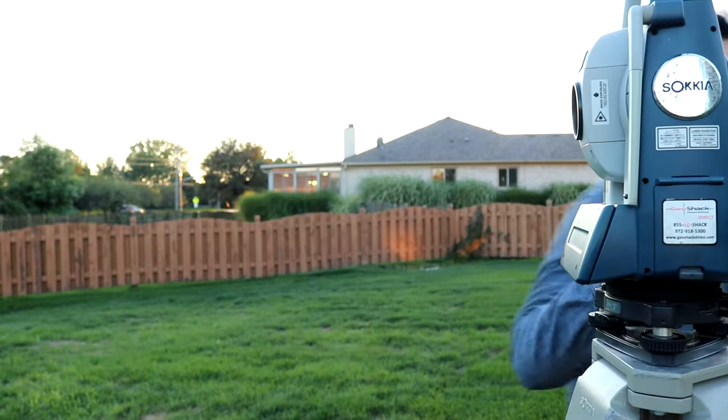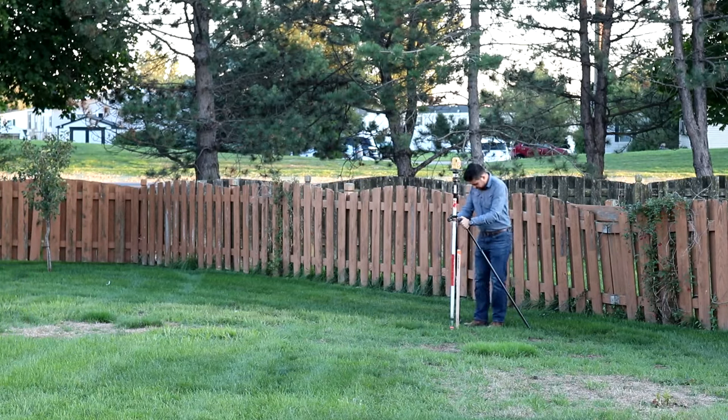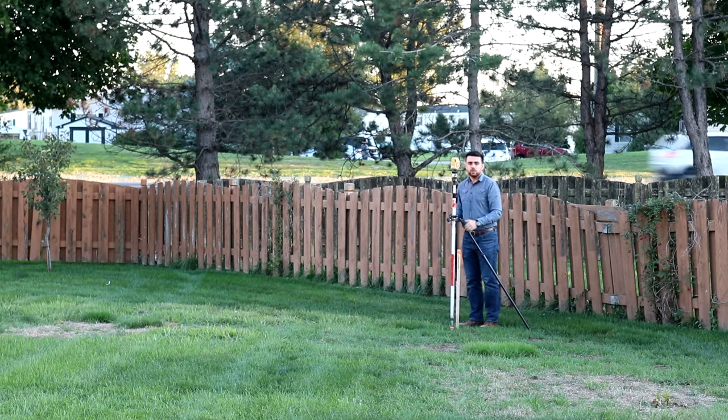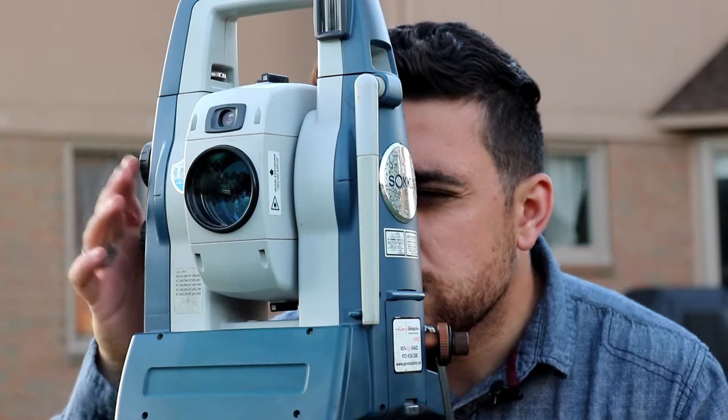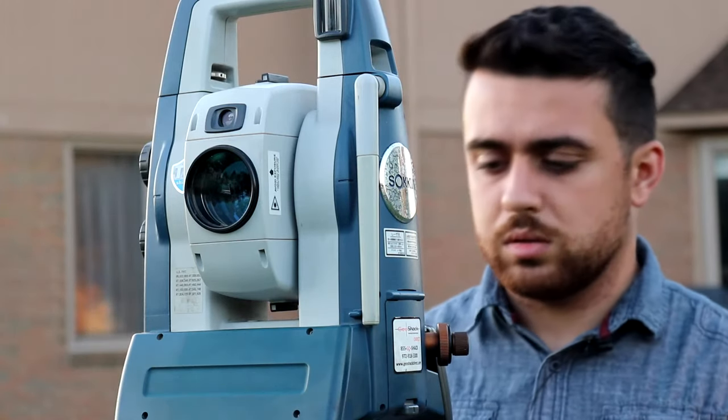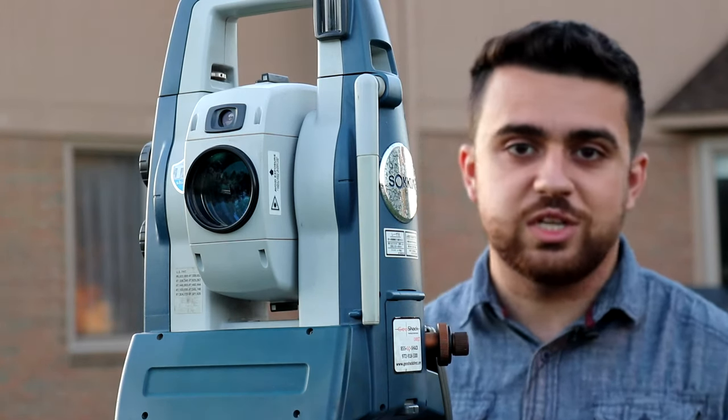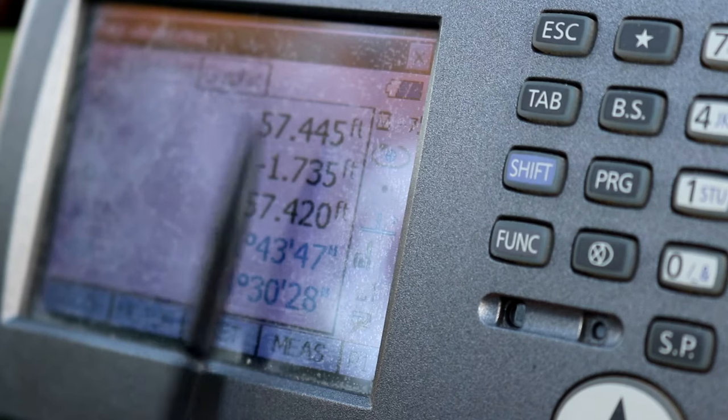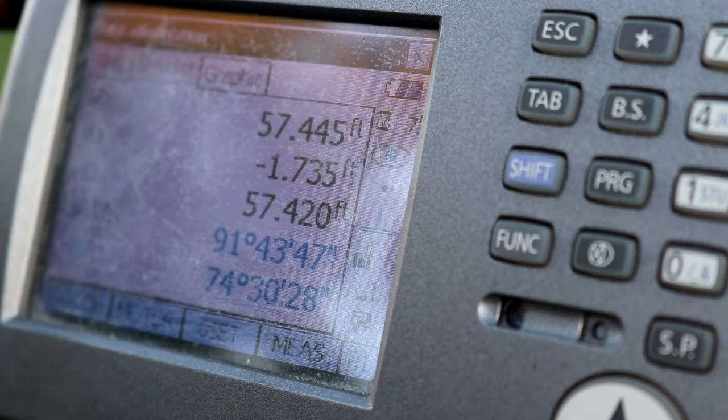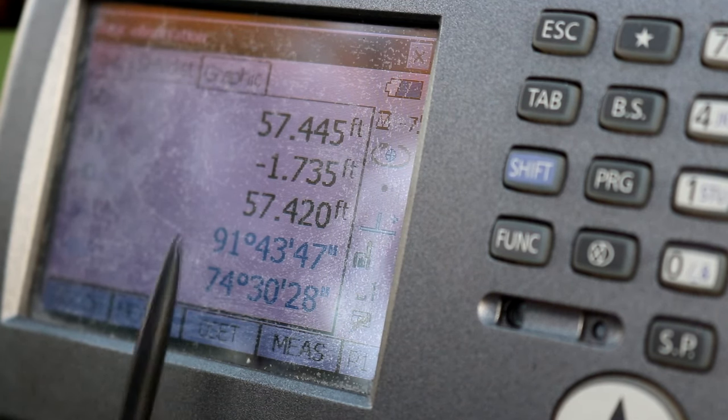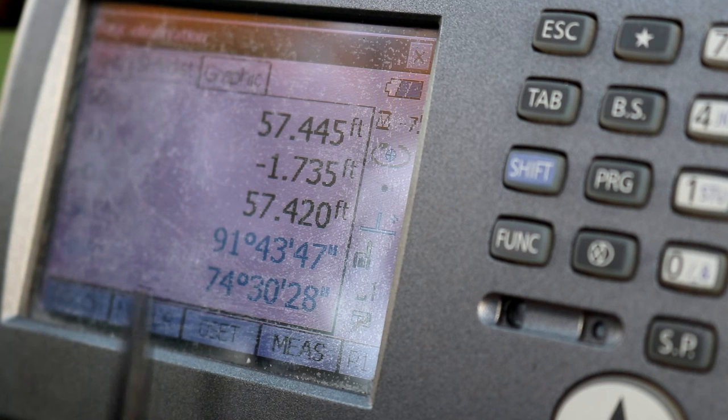The next position that we have to go to is point orange. And that looks good. Okay, and here we are. So the distance is 57.445 feet from our occupation to point orange. The angle between our unknown pink point and orange is 74 degrees, 30 minutes and 28 seconds. Alright, we'll zero this out. And we have one more angle and distance to measure.